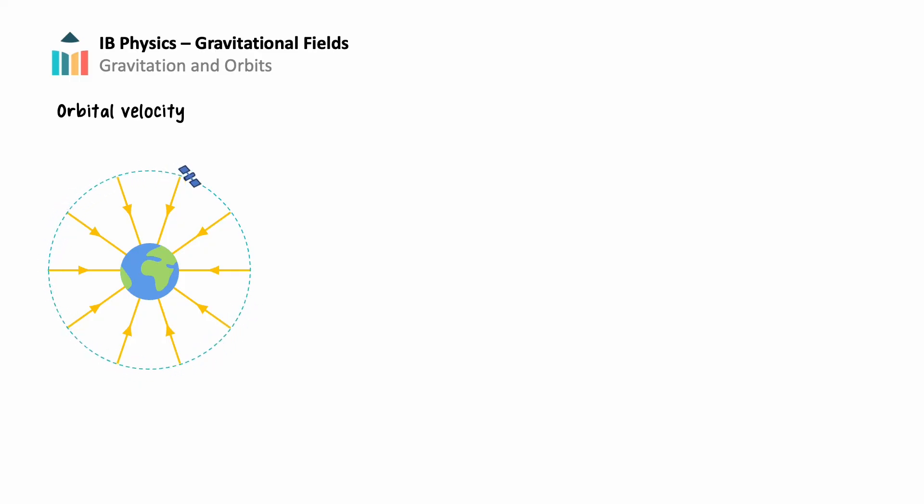When an object is in orbit, gravity provides the centripetal force. The centripetal force equation is F equals m times v squared over r, where F in this case is the gravitational force from Earth, m is the mass of the object in centripetal motion, v is the object's velocity, and r again is the distance to the center of mass of the object providing the force. In this case, the center of the Earth.